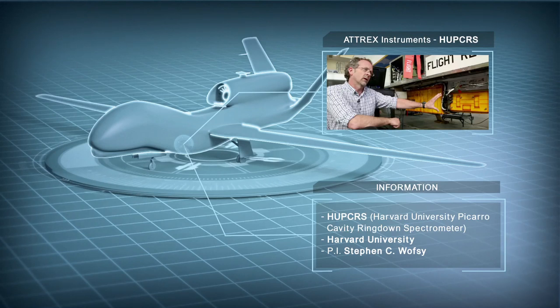We're here working with the Harvard University Cavity Ring-Down Spectrometer. It's an instrument that measures greenhouse gas concentrations, and particularly we make measurements of CO2, CO, and methane.